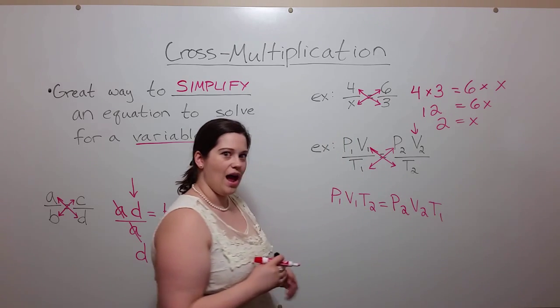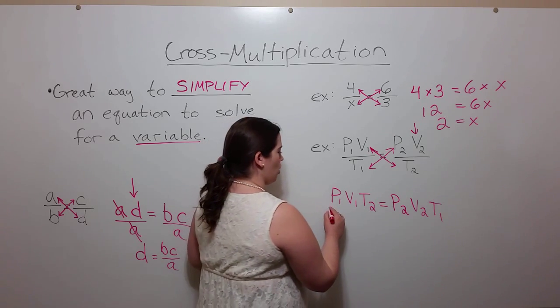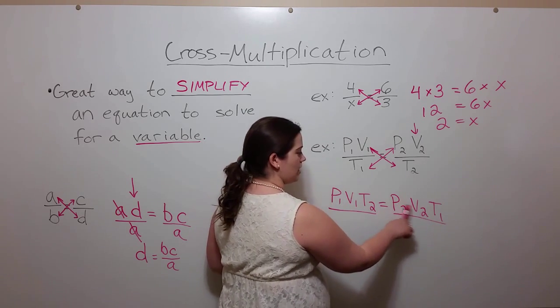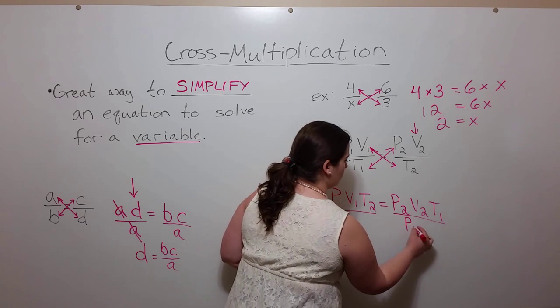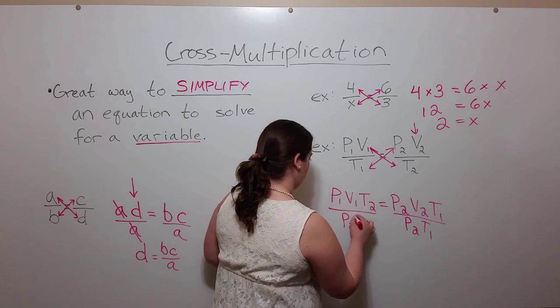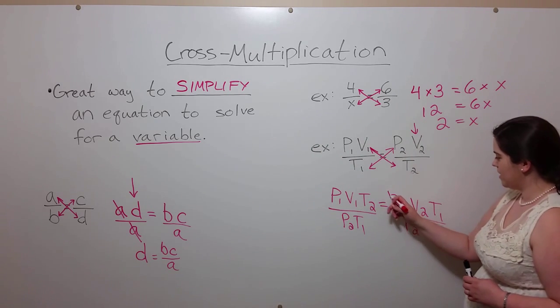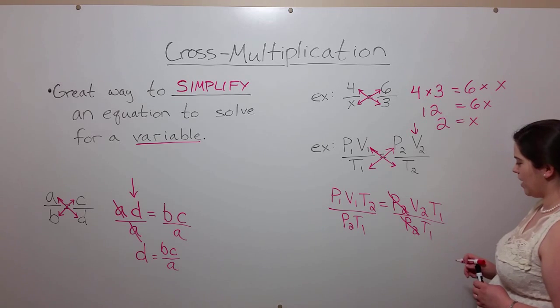Remember we were asked to solve for V2, so we're going to divide both sides by P2 and T1. That means that this P2 and this P2 will cancel.